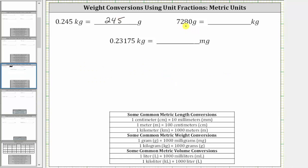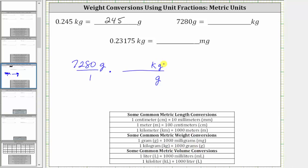Next, we want to convert 7,280 grams to kilograms. We begin by writing 7,280 grams as a fraction with a denominator of one. To perform this conversion, we will still use the fact that one kilogram is equal to 1,000 grams, but now we want the grams to simplify out. Since we have grams in the numerator, grams must be in the denominator of the unit fraction, and kilograms must be in the numerator. Using the conversion one kilogram equals 1,000 grams,